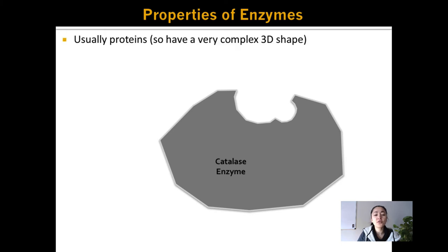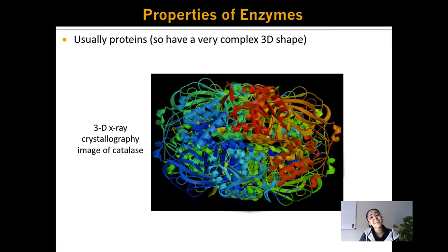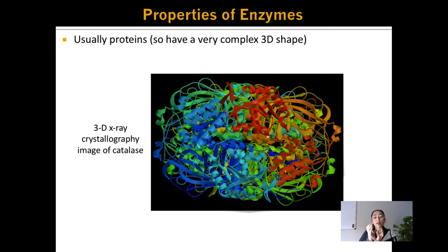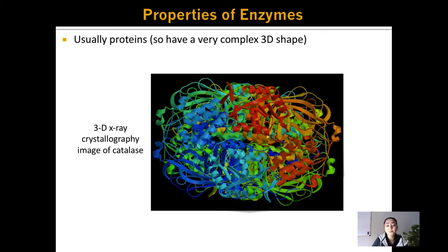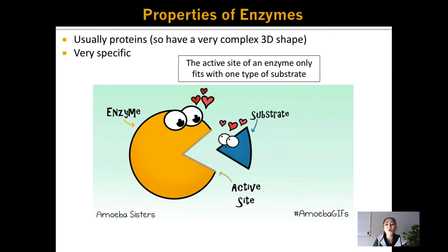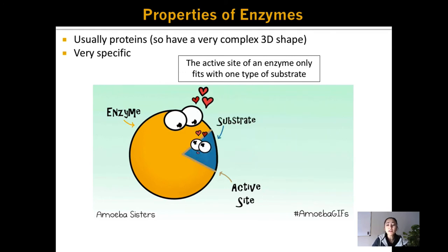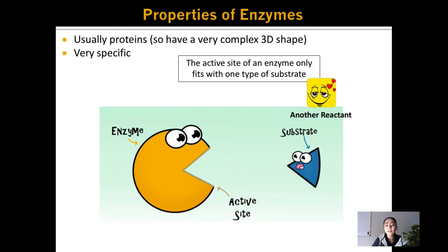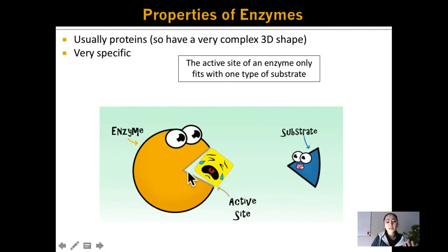What are some important properties of enzymes? One is that enzymes are usually proteins, and proteins have a very complex three-dimensional shape. If you were to actually look at what the enzyme catalase looks like, it is very, very complex. The three-dimensional folding of this enzyme is very important to its function, because the shape of the enzyme determines the shape of the active site. If you alter the shape of the enzyme at all, sometimes it just doesn't even work anymore. These enzymes are very specific — this active site will only fit one type of substrate. Even if another reactant tries to enter the active site, it cannot be changed because it doesn't fit perfectly.